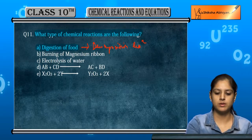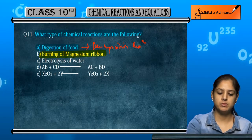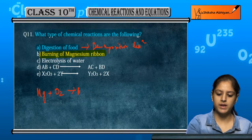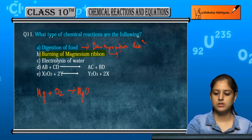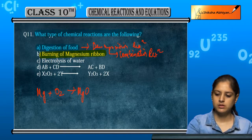Burning of magnesium ribbon. When magnesium ribbon burns, Mg and O2 combine to form MgO. So this is a combination reaction.